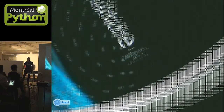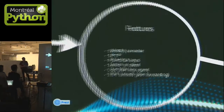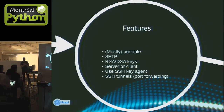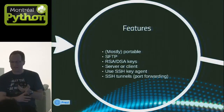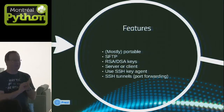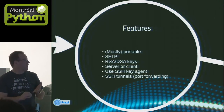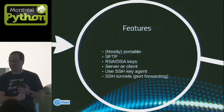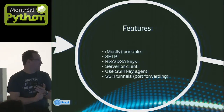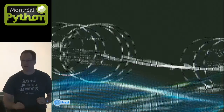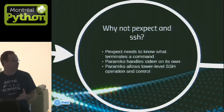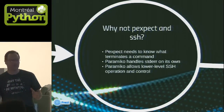Some other features from Paramiko: it's very portable. As long as you have PyCrypto installed, you'll be able to use Paramiko. It has SFTP and PKI support. You can use it as a client or server. If you have an SSH agent, you can use it. It can also do SSH tunneling — very much like what OpenSSH offers, but all in pure Python.